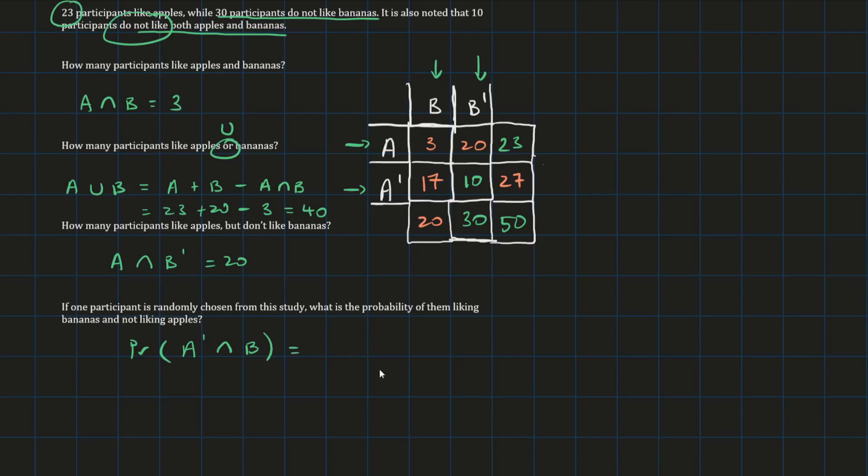So in this case, it's a probability instead of the actual count. So because if we choose a random person, everyone's equally probable of being chosen. We could just do the number of people who fit into this set of not liking apples, but liking bananas from the table, that's 17. And we divide that by the total number of participants, which is 50. And if we wanted this as a decimal, it'll be 0.34.